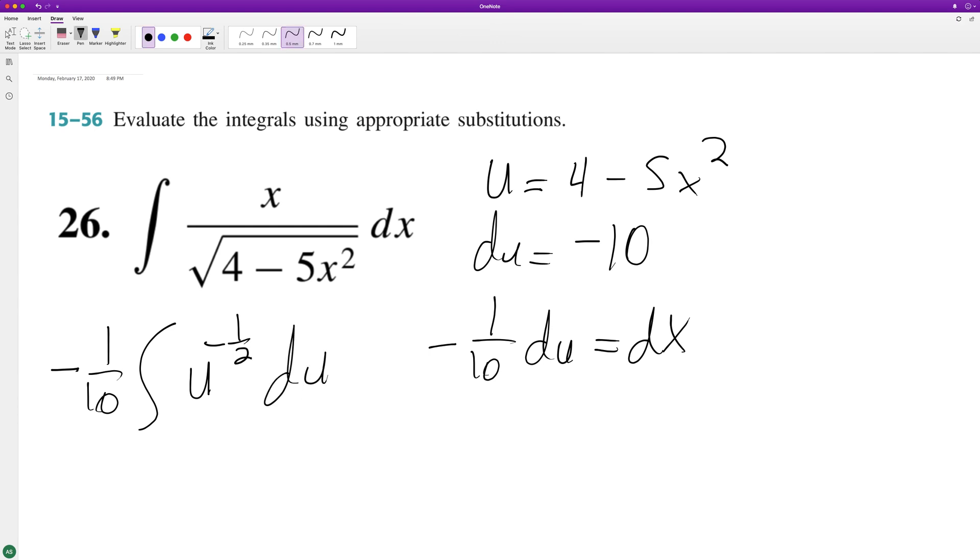So when we integrate this, we're going to get negative 1 over 10, and then you add 1 to the exponent, so it becomes u raised to the 1 half divided by 1 half. So it's the same thing as multiplying by 2. So we get negative 1 fifth.